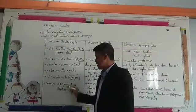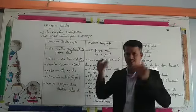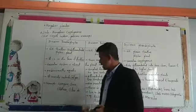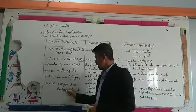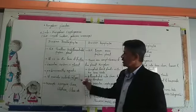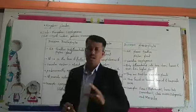Examples of Division Thallophyta are Spirogyra, which has a river-line structure, then Chara, then Ulothrix, and Ulva.